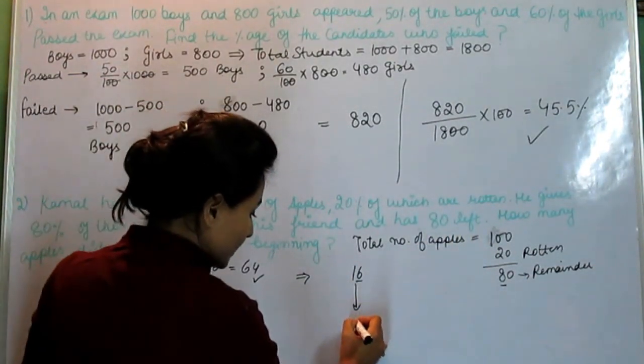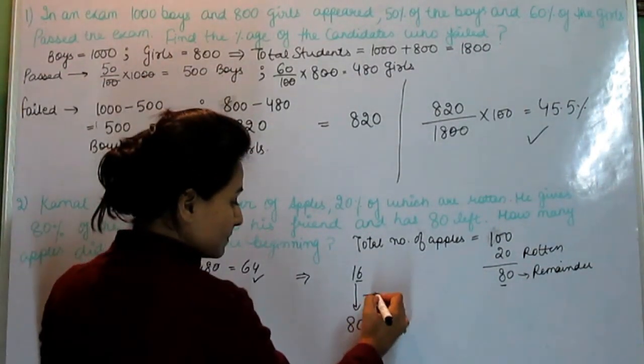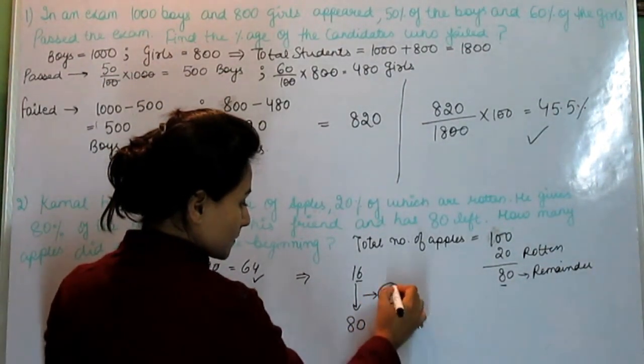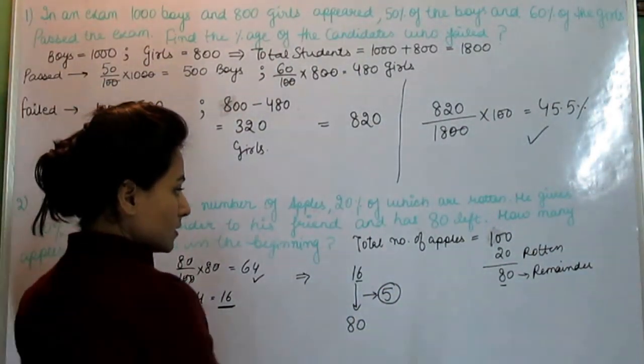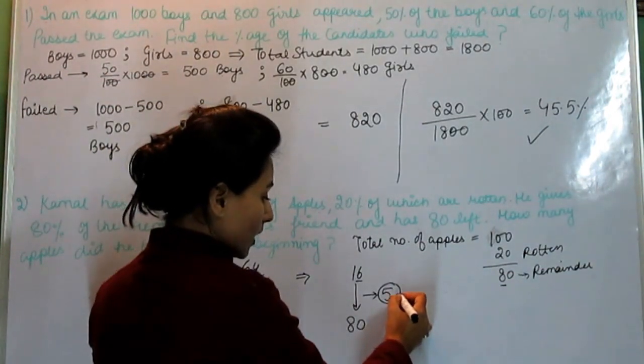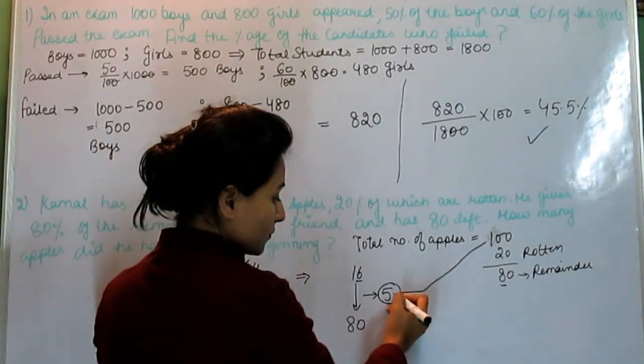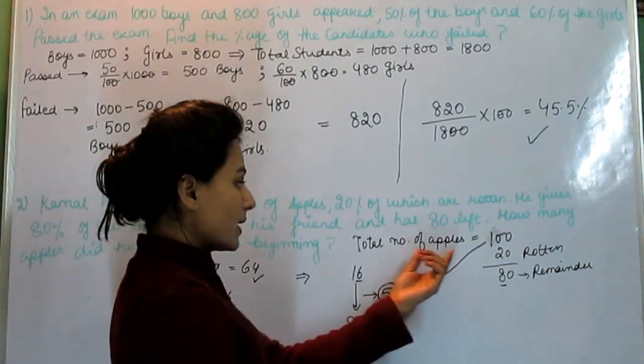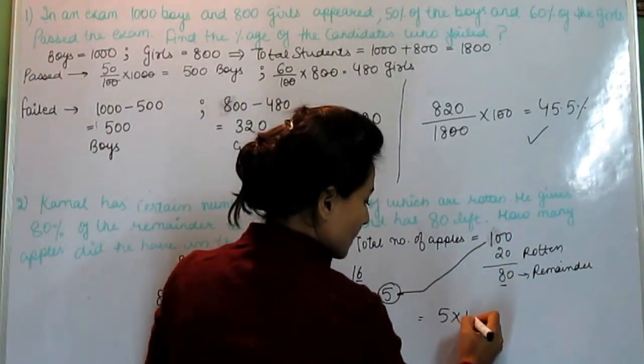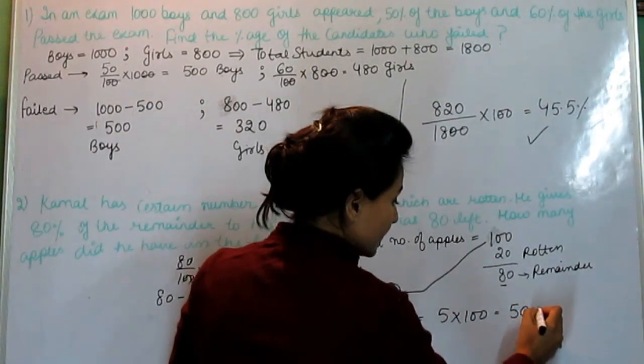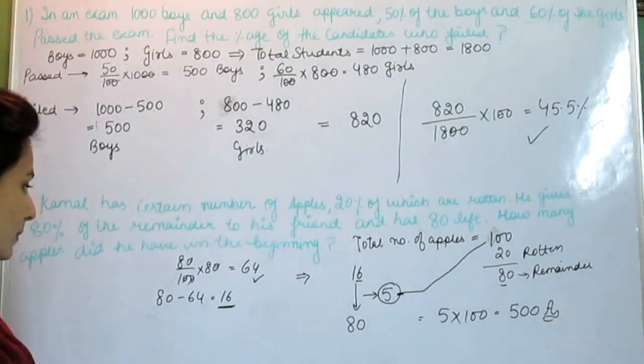Now we multiply this 5 with this 100. Reason being, because we have let the total number of apples is 100. So 5 into 100 equals 500. It means he had 500 apples in the beginning.